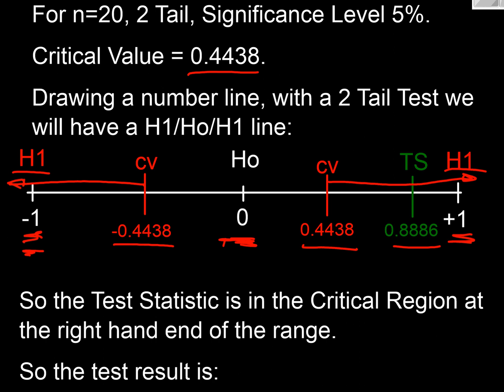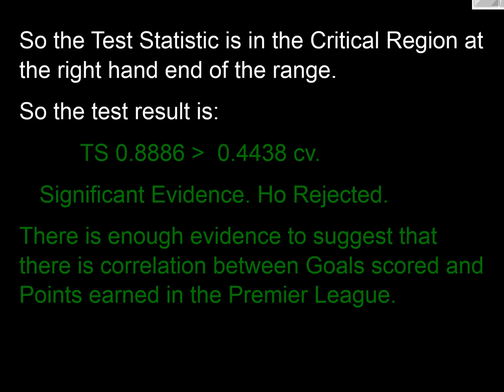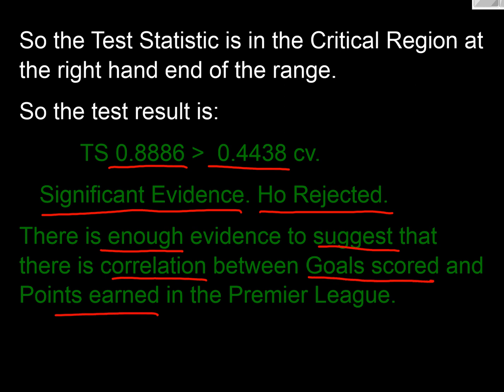So let's write out our numbers. Our test statistic of 0.8886 is greater than our critical value of 0.4438. So we've got significant evidence and we're going to reject H0 and we'd accept H1. So, and then with our context statement, there is enough evidence to suggest that there is correlation between goals scored and points earned in the Premier League. And it's as simple as that.